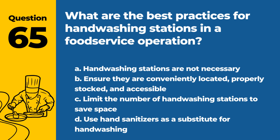Question 65. What are the best practices for hand-washing stations in a food service operation? A. Hand-washing stations are not necessary. B. Ensure they are conveniently located, properly stocked, and accessible. C. Limit the number of hand-washing stations to save space. D. Use hand sanitizers as a substitute for hand-washing. Answer: B. Effective hand-washing stations should be easily accessible, well-stocked with soap and paper towels, and located at convenient points.